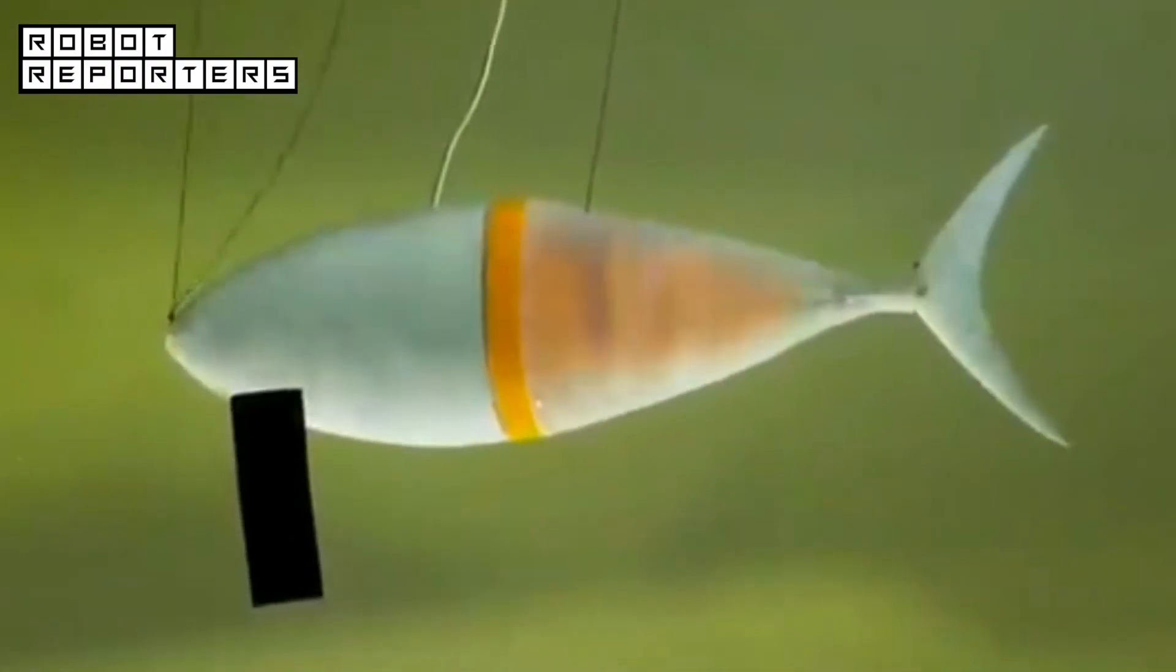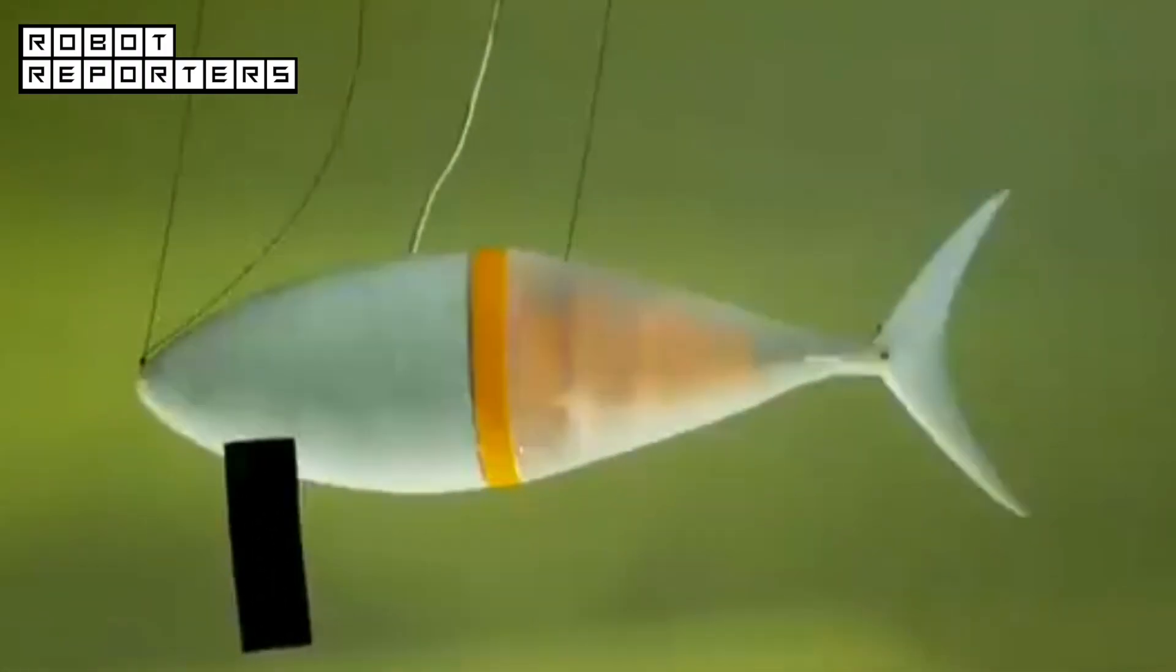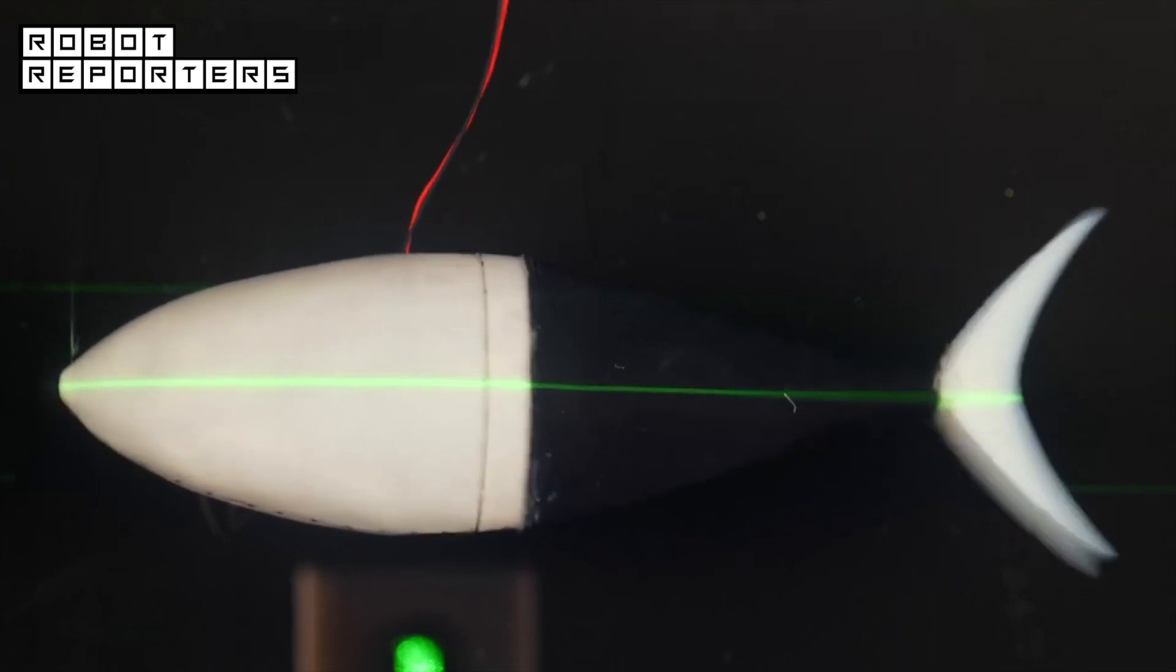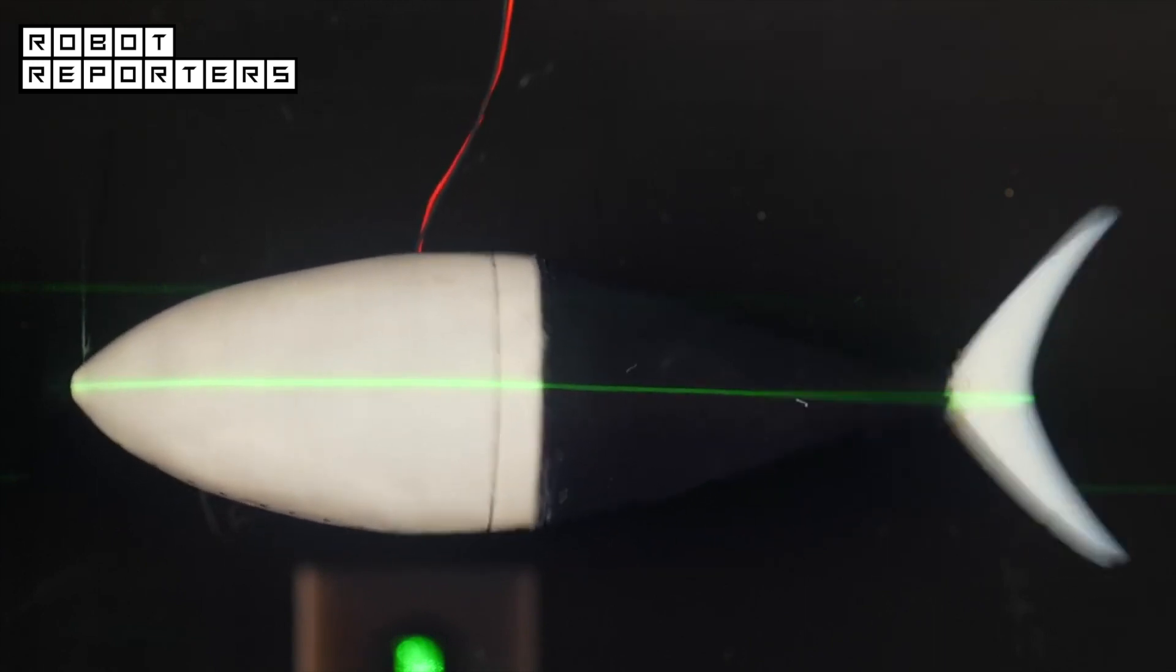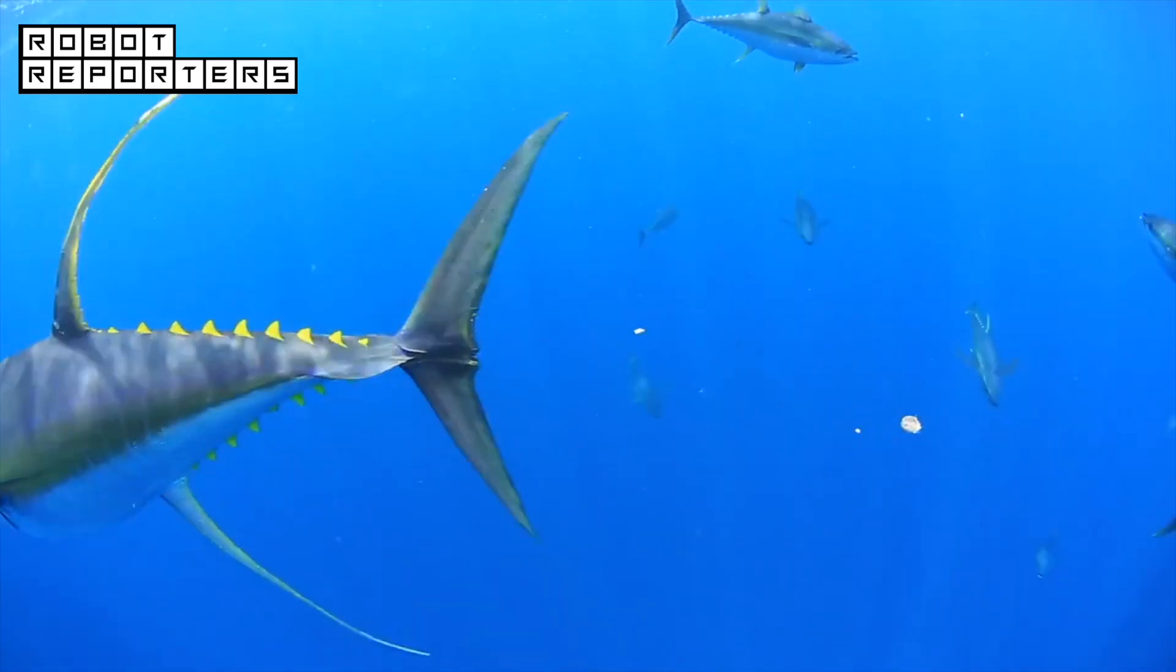Mechanical engineers at the University of Virginia and biologists from Harvard University have created the first robotic fish that mimics the speed and movements of live yellowfin tuna.